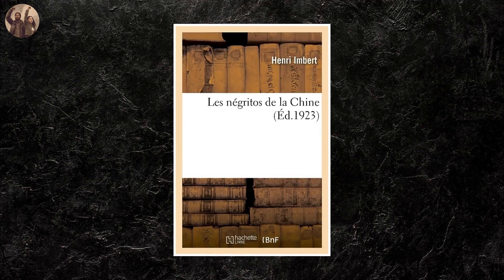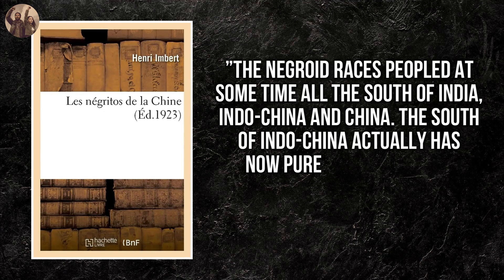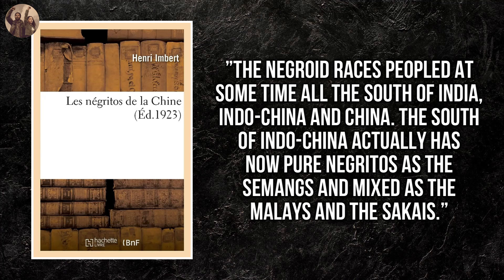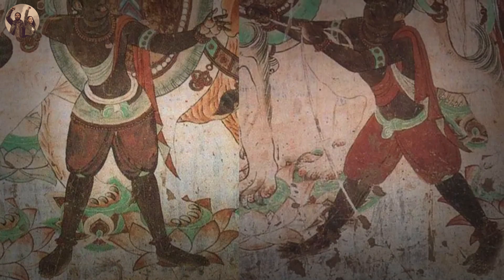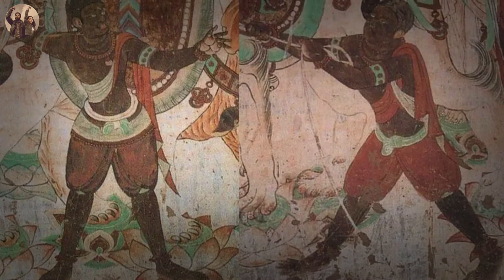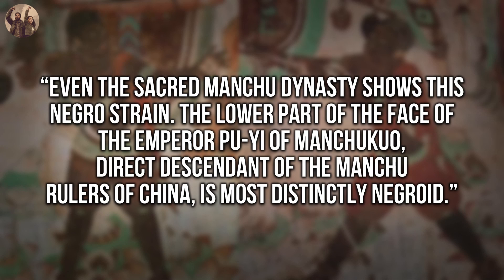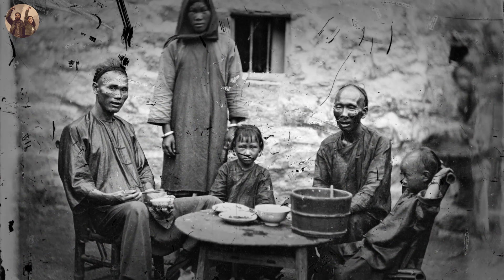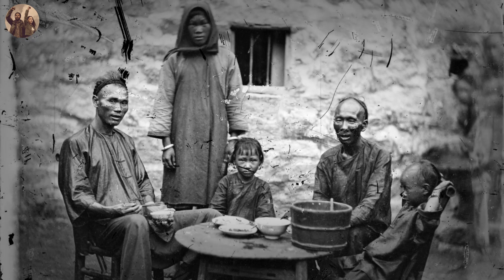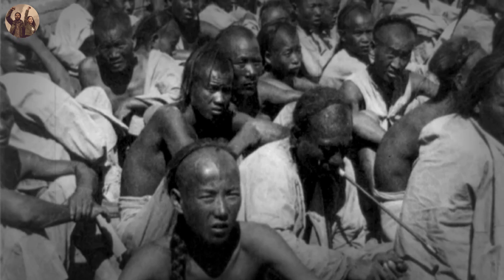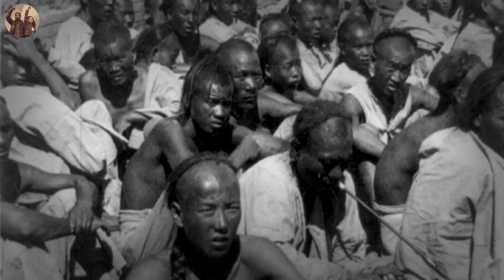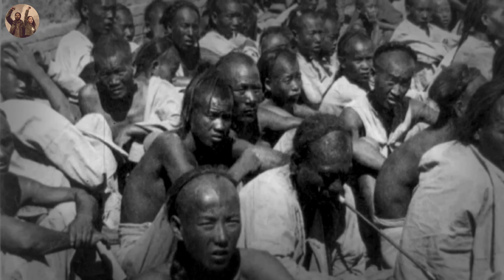H. Imbert, a French anthropologist, stated in his book Les Negritos de la Chine that Negroid races peopled at some time all the south of India, Indochina, and China. Another author and professor, Chang-Sing Lang, revealed similar information in his writing on the importation of Negro slaves to China under the Tang Dynasty. Even the sacred Manchu dynasty shows this Negro strain — the lower part of the face of Emperor Pu Yi of Manchukuo, direct descendant of the Manchu rulers of China, is most distinctly Negroid. These researchers cite evidence of substantial populations of blacks in early China and reports of a major kingdom ruled by blacks in historical Chinese documents.